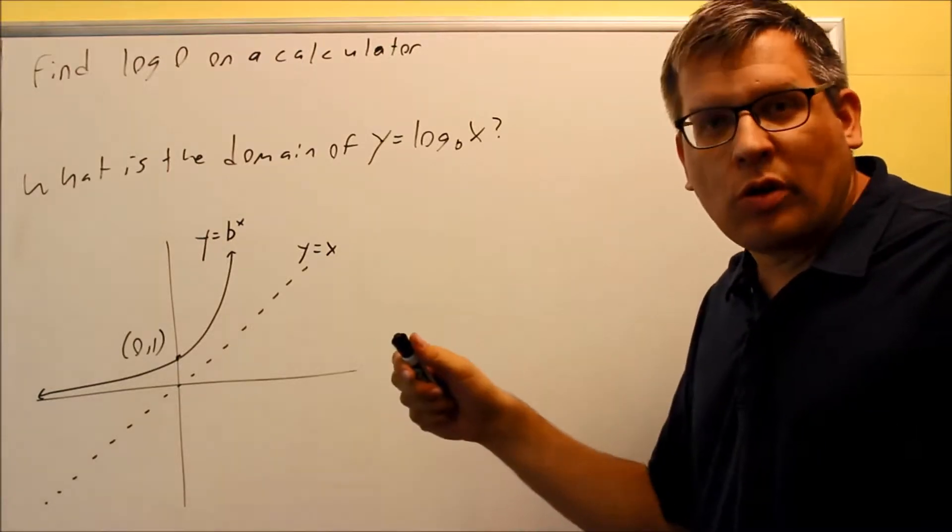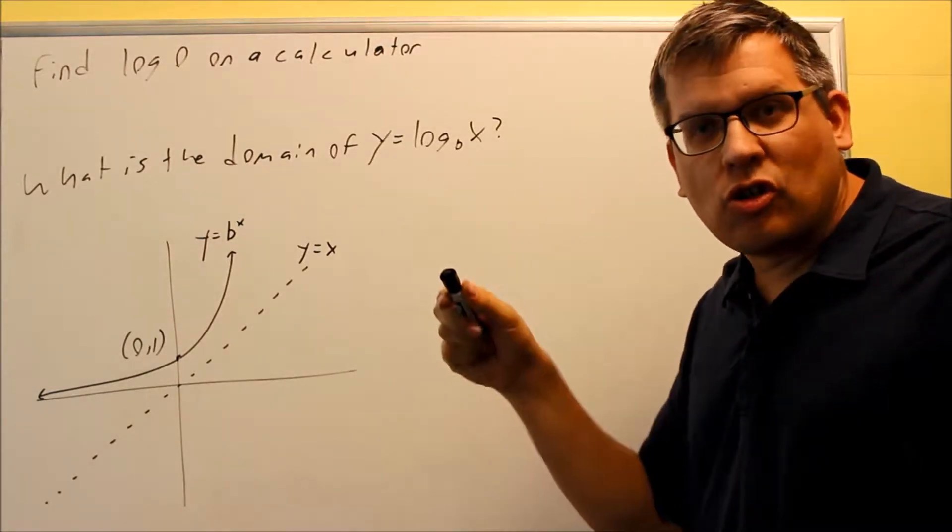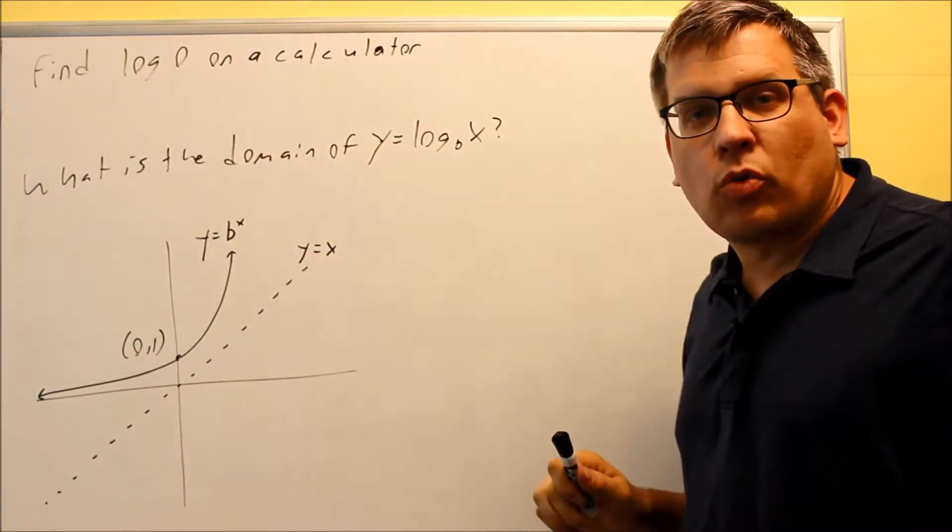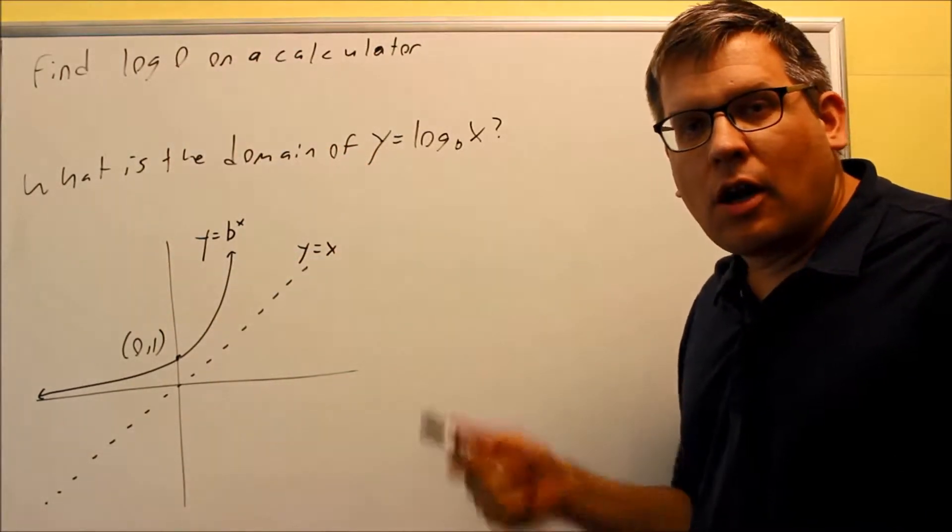It's kind of like when you see a square root. The index is really a 2, but they don't write it. They just show square root. Same idea here. If you don't see a number written, it's always going to be base 10.